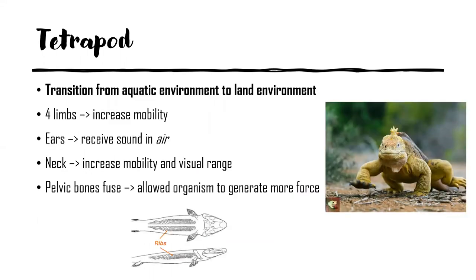We're focusing on tetrapods because in this clade we see the emergence of traits that help us transition from the aquatic environment to the land environment, showing how animals spread around the globe. The first trait is the development of four limbs, which increases mobility for walking. Next are ears, so we're able to receive sound in air. Then the neck, which increases mobility and visual range. Finally, the pelvic bones are now fused to the vertebral column, allowing organisms to generate more force while walking and making for more efficient movement.